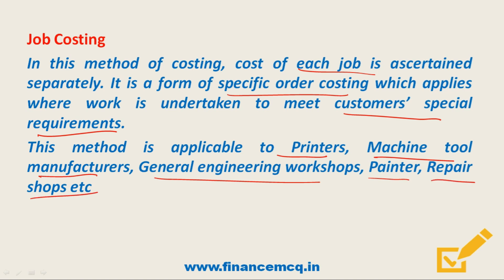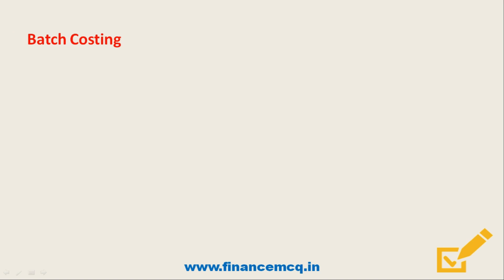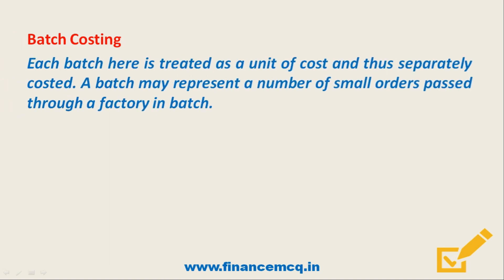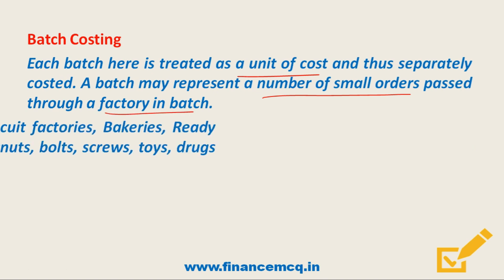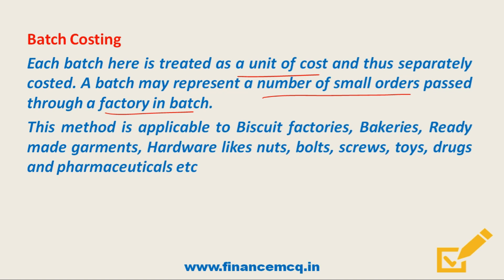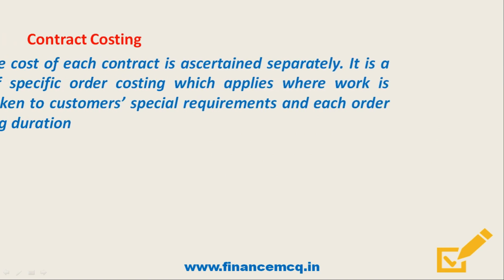Next is batch costing. Here each batch is treated as a unit of cost and thus separately costed. A batch may represent a number of small orders passed through a factory in batches. This type of costing is applicable to biscuit factories, bakeries, ready-made garments, and hardware items like nuts, bolts, screws, toys, drugs, and pharmaceuticals.